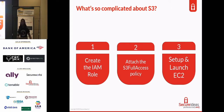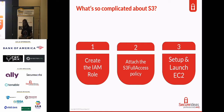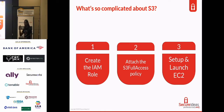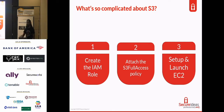Here's a step-by-step process on how to access S3 through an EC2 instance. Step one: create the IAM role. Step two: attach the S3 full-access policy. This policy gives wide-open access to S3 — it's built into every single AWS account and takes four clicks to use. Then just set up and launch an EC2 instance. Spin it up and click through the online wizard.